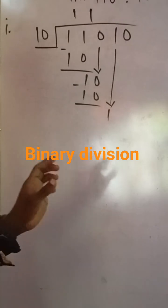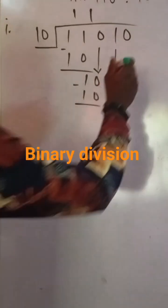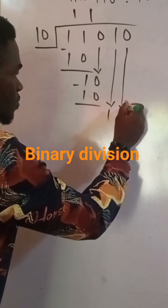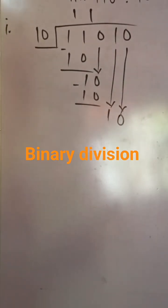At this point, you need to be very careful. Since 10 into 1 cannot go, you bring down the next value again. Here it becomes 10.